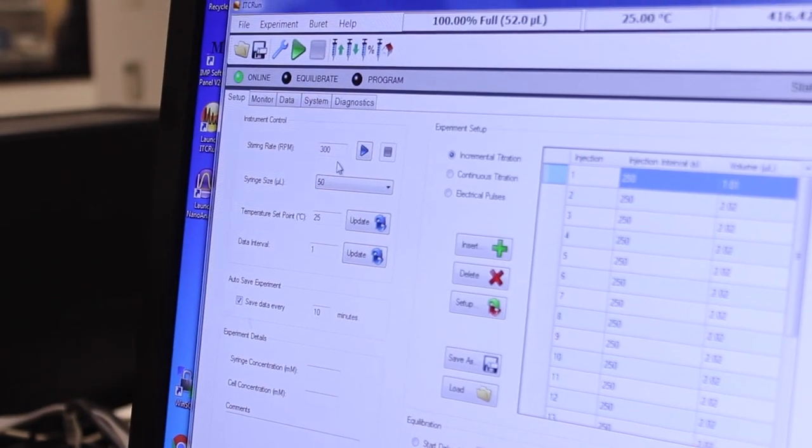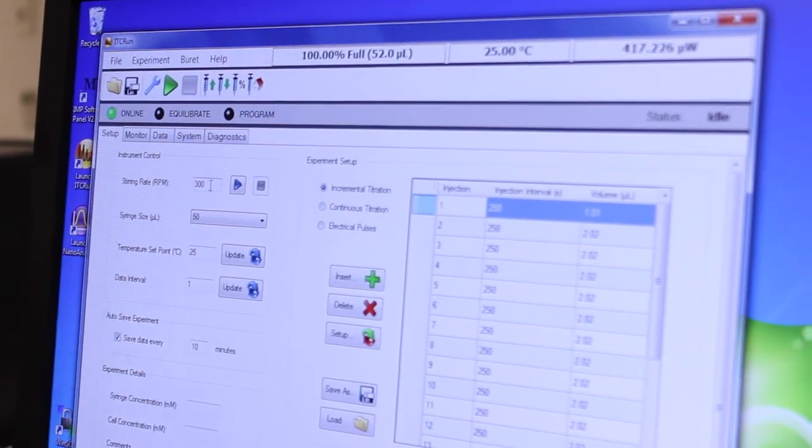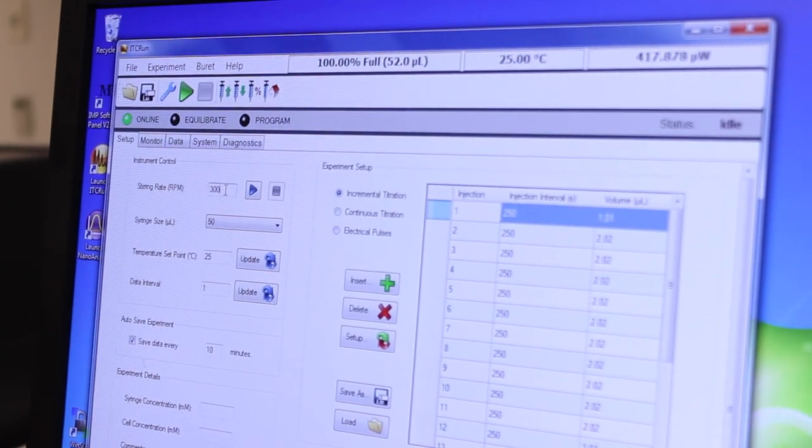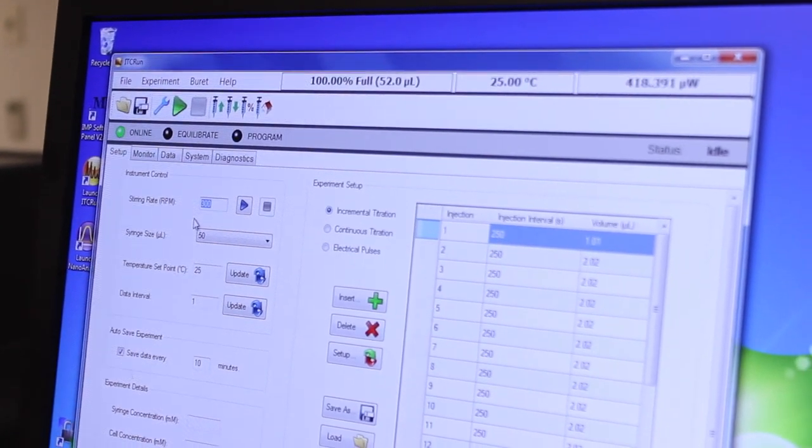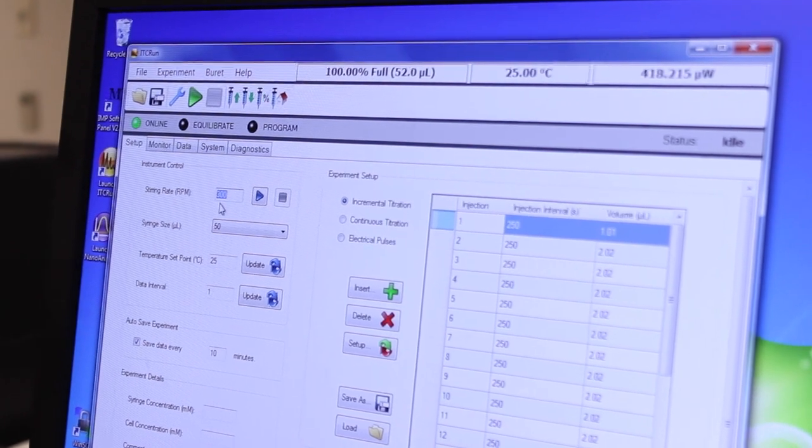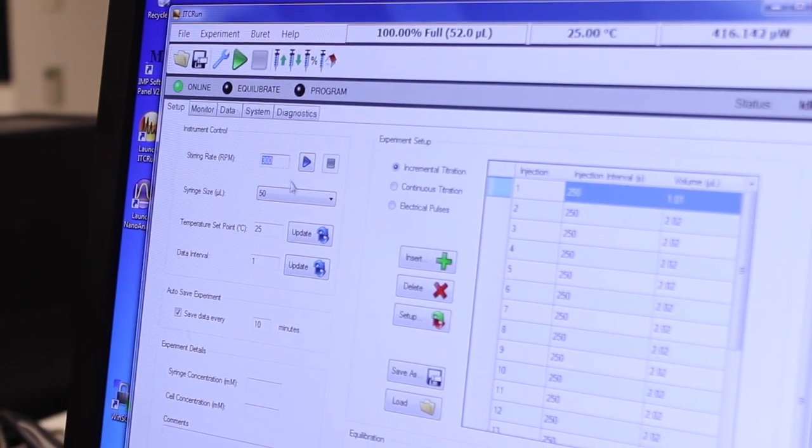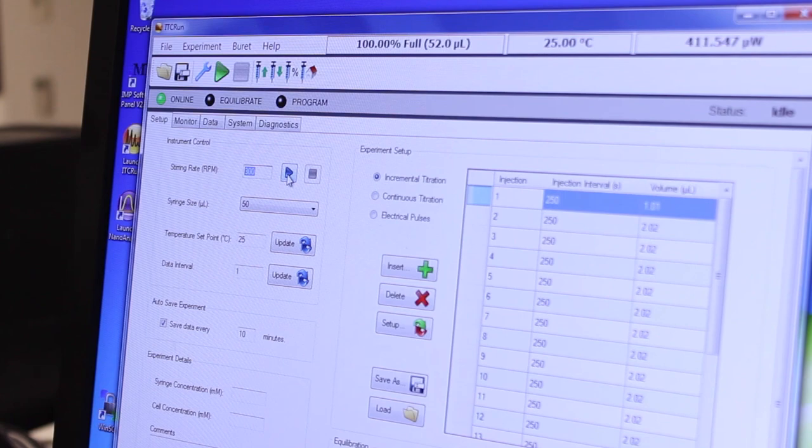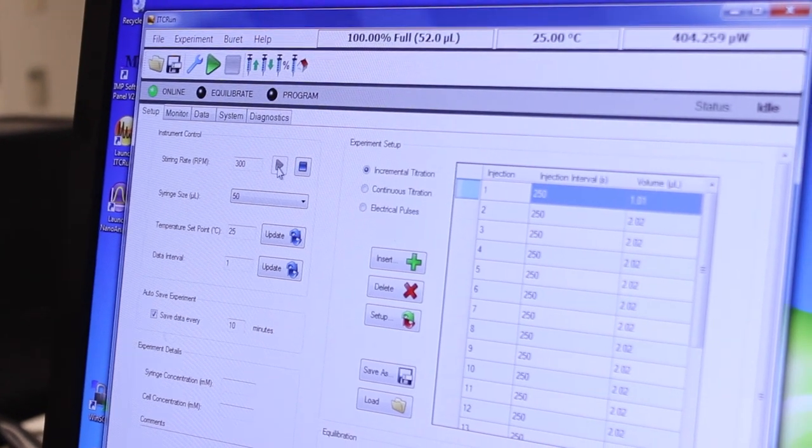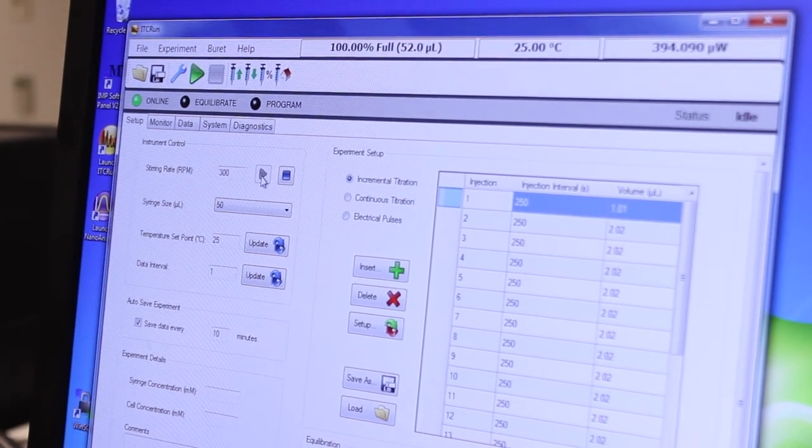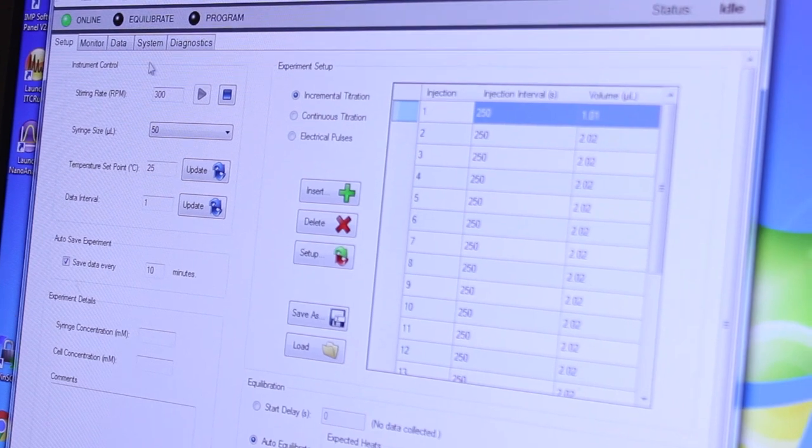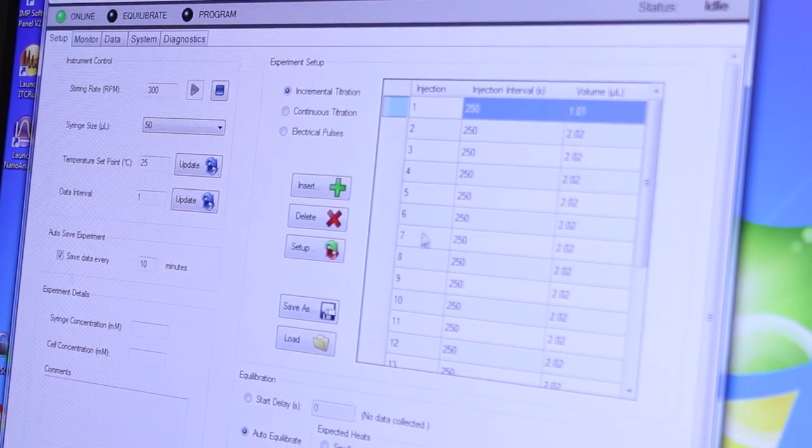In the software first thing I would typically recommend doing is to start the syringe stirring for our instrument typically somewhere between 250 and 300 rpms is a reasonable stirring rate.